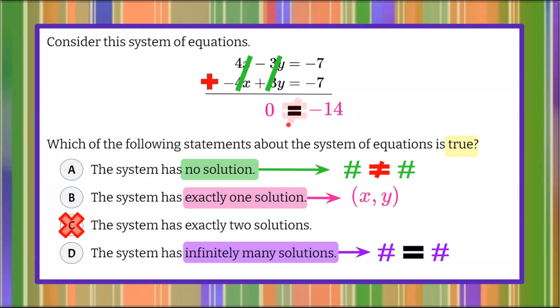Zero does not equal negative 14. That's an incorrect or a false statement. So therefore, I can conclude that A is the answer here, and that is what is true. When I solve, I get a numerical statement that is not true. So therefore, this system has no solution.